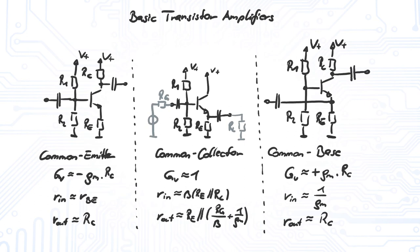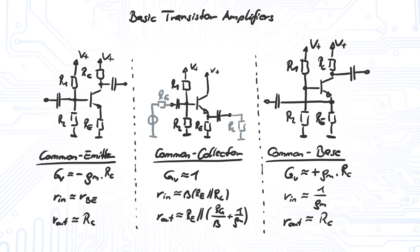Depending on the application, we use one or a combination of these basic transistor amplifiers. As we will see later on, larger amplifier circuits like the differential and operational amplifier are basically a couple of these basic circuits combined.